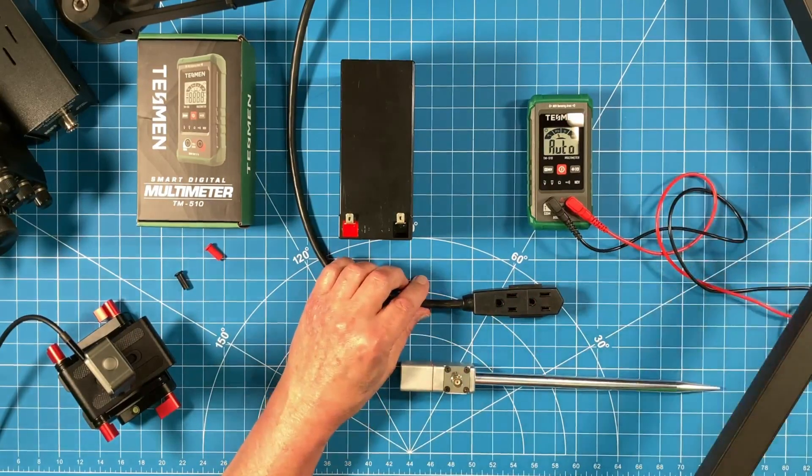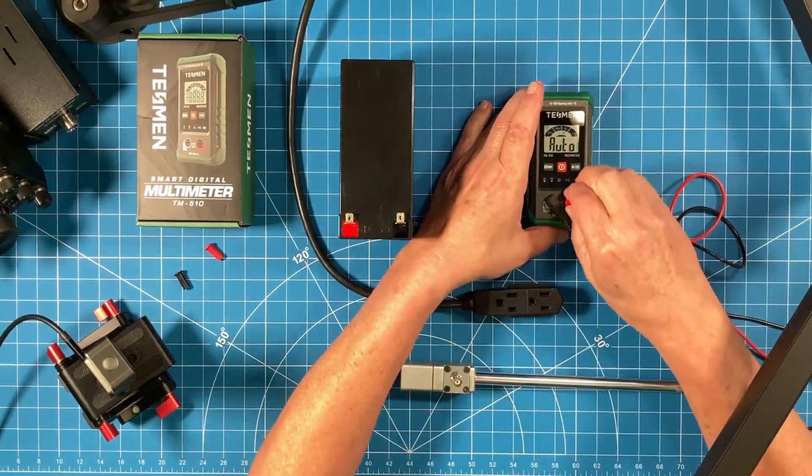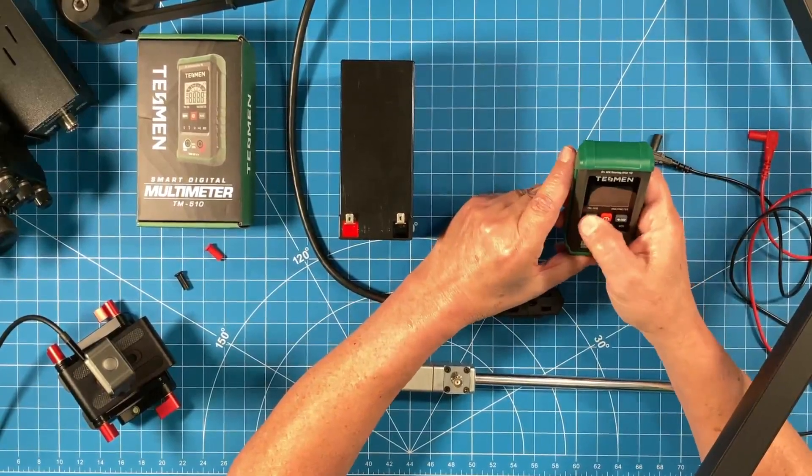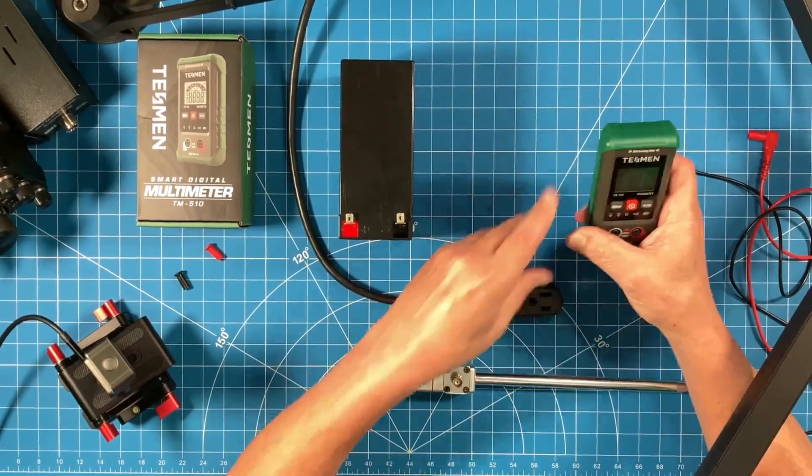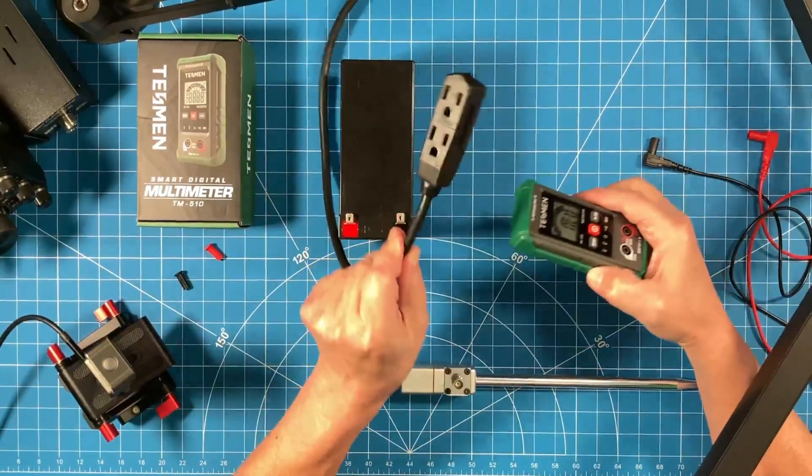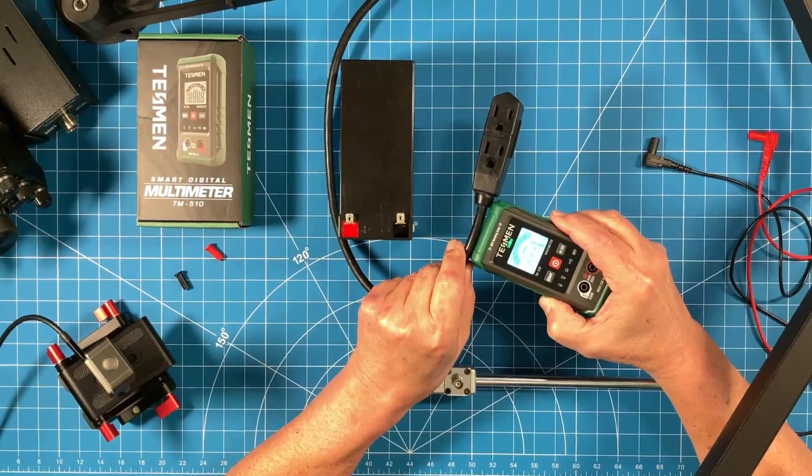Now the other thing that it claims that it can do is provide a non-contact voltage measurement. So let's go ahead and pull that off. And let's see, I believe we press this button. Yep, that's the button we press. And let's see if it is indeed going to tell us that we have voltage. Look at that. We have voltage.